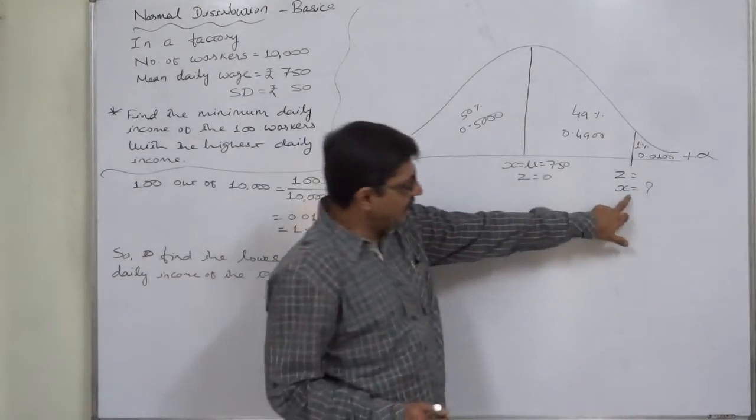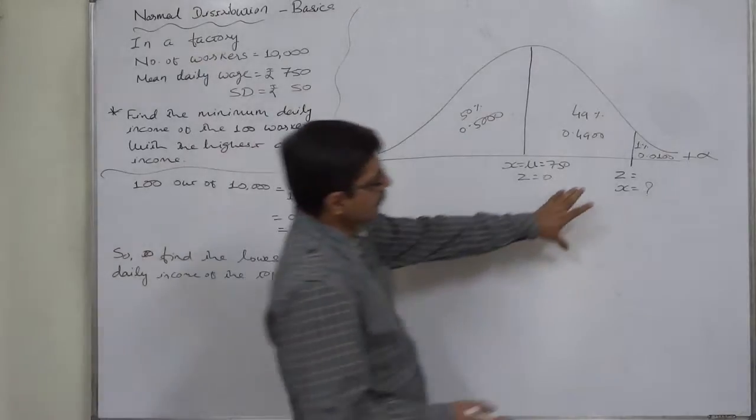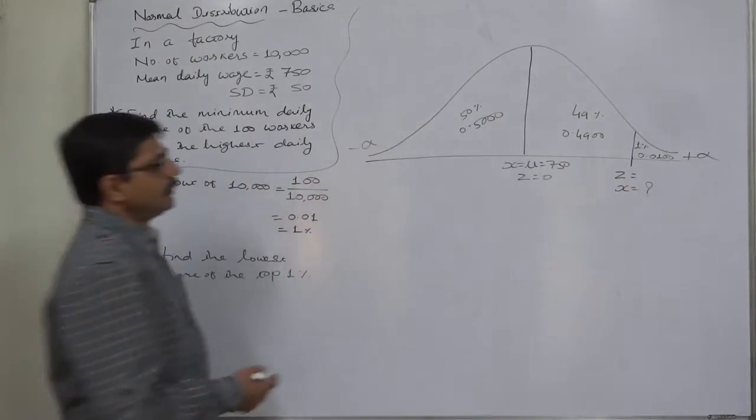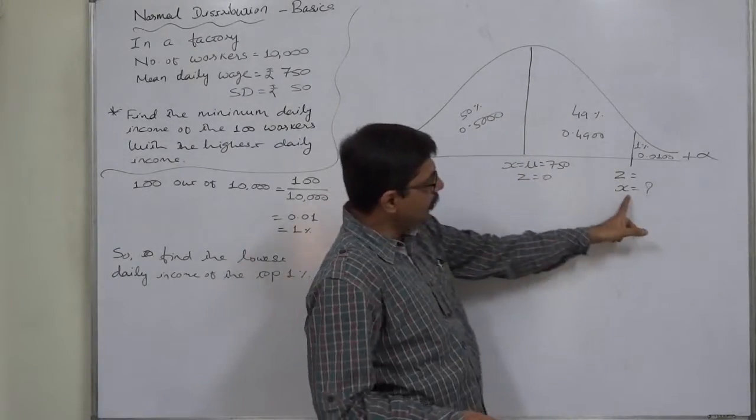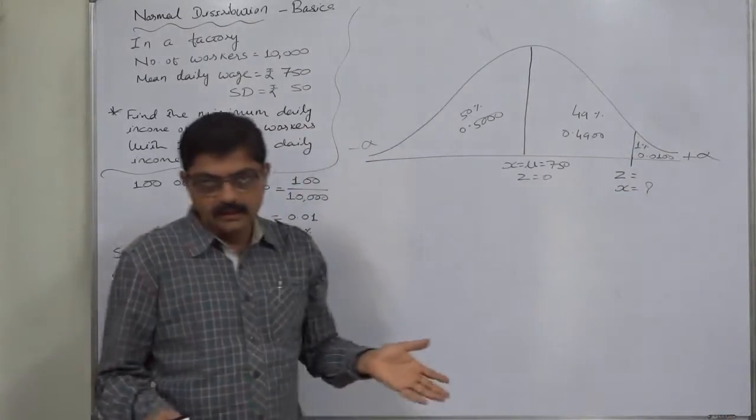Now we want to find the value of X. The interpretation of this question is: what is the value of X at this point? The area between Z₀ and Z at this point is 0.49.